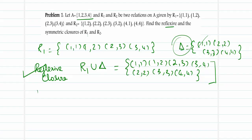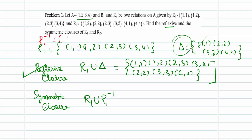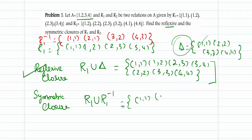Now for the symmetric closure of R1: we take the union of R1 with R1 inverse. R1 inverse is obtained by flipping each element — (1,1) flips to (1,1), (1,2) flips to (2,1), (2,3) flips to (3,2), (3,4) flips to (4,3). Taking the union: start with R1 = {(1,1),(1,2),(2,3),(3,4)}, then add (2,1), (3,2), and (4,3). Since (1,1) is already there, we ignore it. All elements now have their inverses included, so this new relation is the symmetric closure.